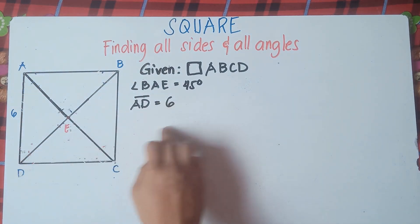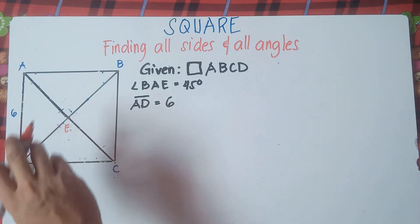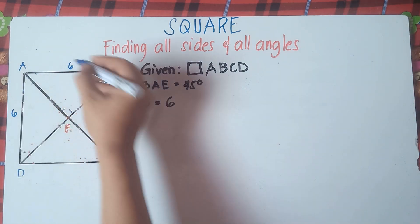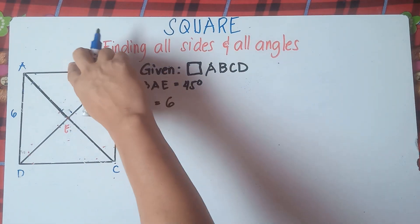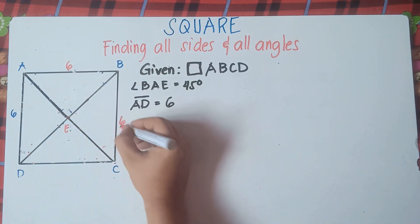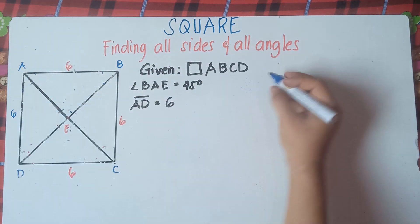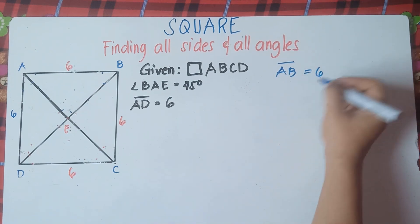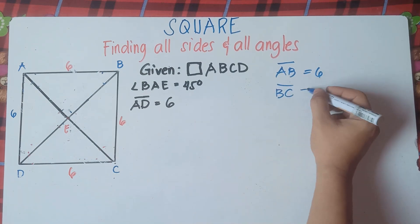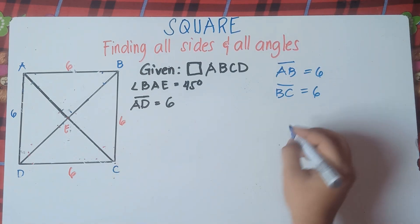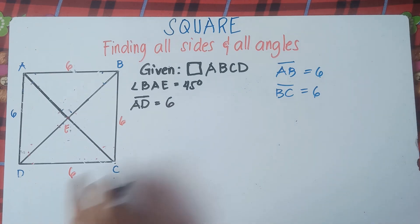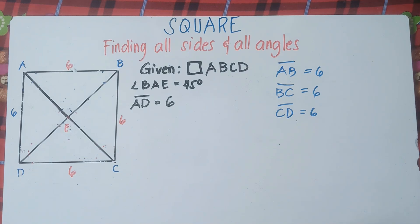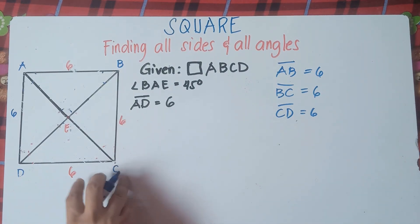Given AD is 6, therefore, we already know that the properties of a square say all four sides are congruent. So AB is also 6, BC is 6, and CD is 6. So we're done with the sides on the outside part.